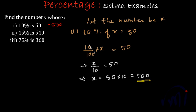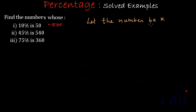And now let's take the second problem, and in the second problem also we are going to assume the number as x only. So the second problem will get converted into 45% of x is equal to 540.